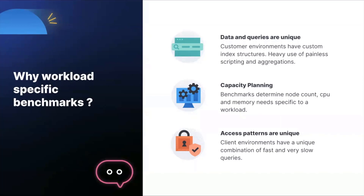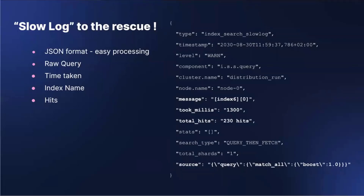Given these benefits, how do we create custom benchmarks? Our first ingredient are the queries that are running on the current production system. One place to tap for these queries is slow logs. Slow logs can be turned on by flipping a configuration, and any query exceeding that specified time threshold would be logged. The slow logs can be generated in JSON format. It contains a few important parameters such as the actual query executed, time taken, the index against which it was run, and the hits that matched the query. Having the logs in JSON also makes it easier to parse and has higher data quality.